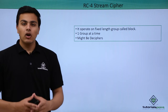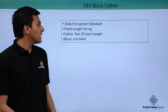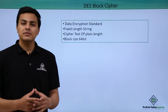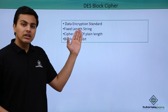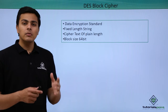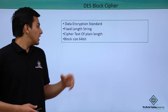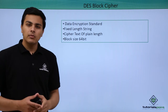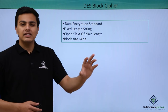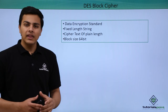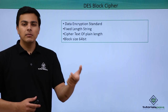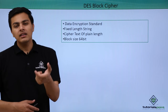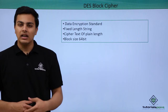Now let's talk about some block cipher algorithms. The first one is DES, which stands for Data Encryption Standard. DES operates on a fixed-length block — the block size is 64 bits. This means if our data is 128 bits, the first 64 bits will be encrypted first, and then the next 64 bits will be encrypted after the previous 64-bit block.